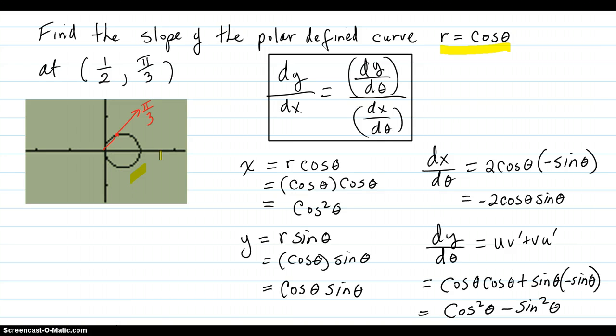At pi over three, you get this angle here. And there's a point right here on the curve that corresponds to a radius out there of one-half. And that's the point that we're supposed to find the slope at.